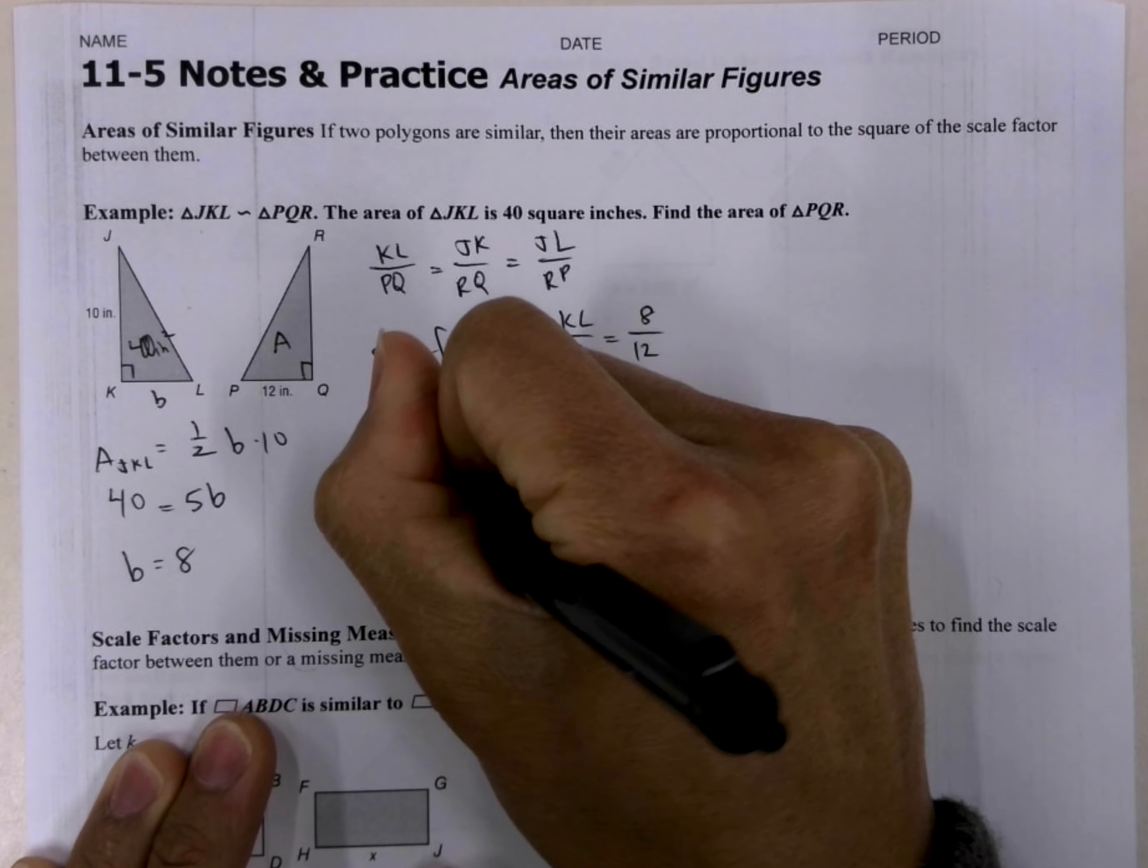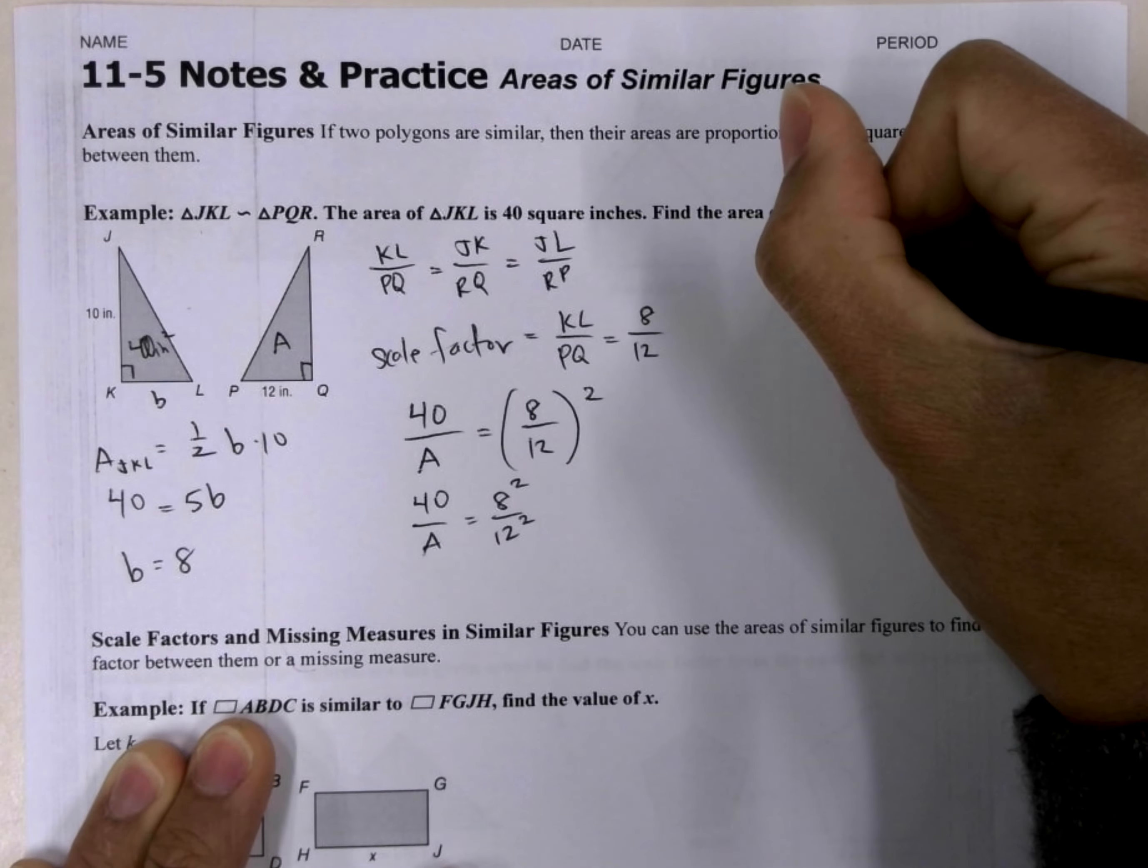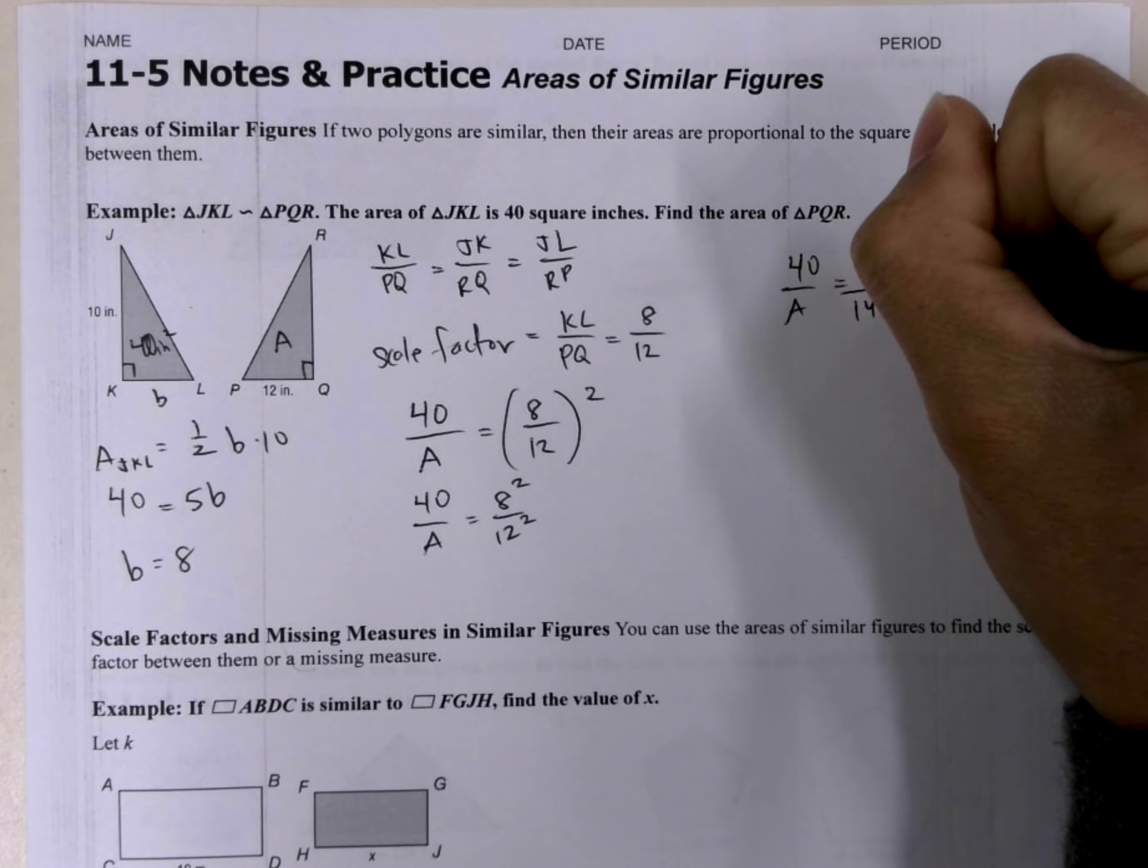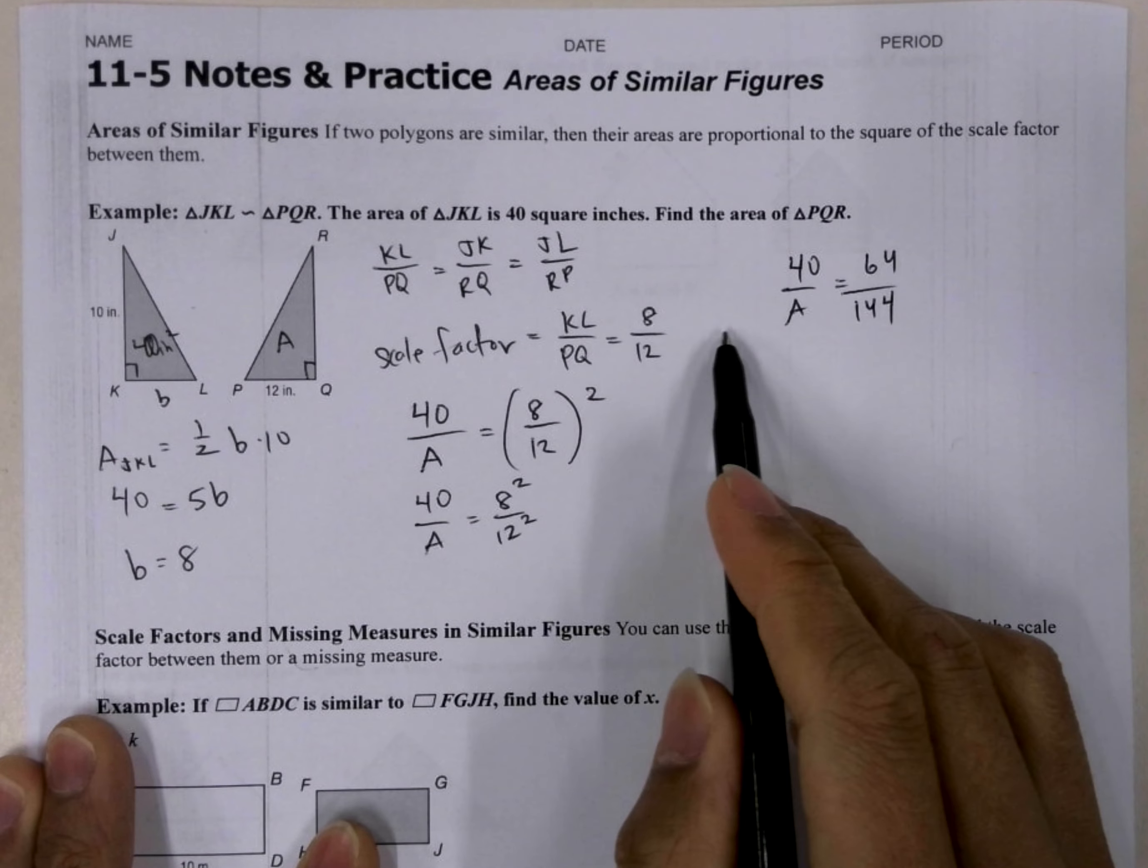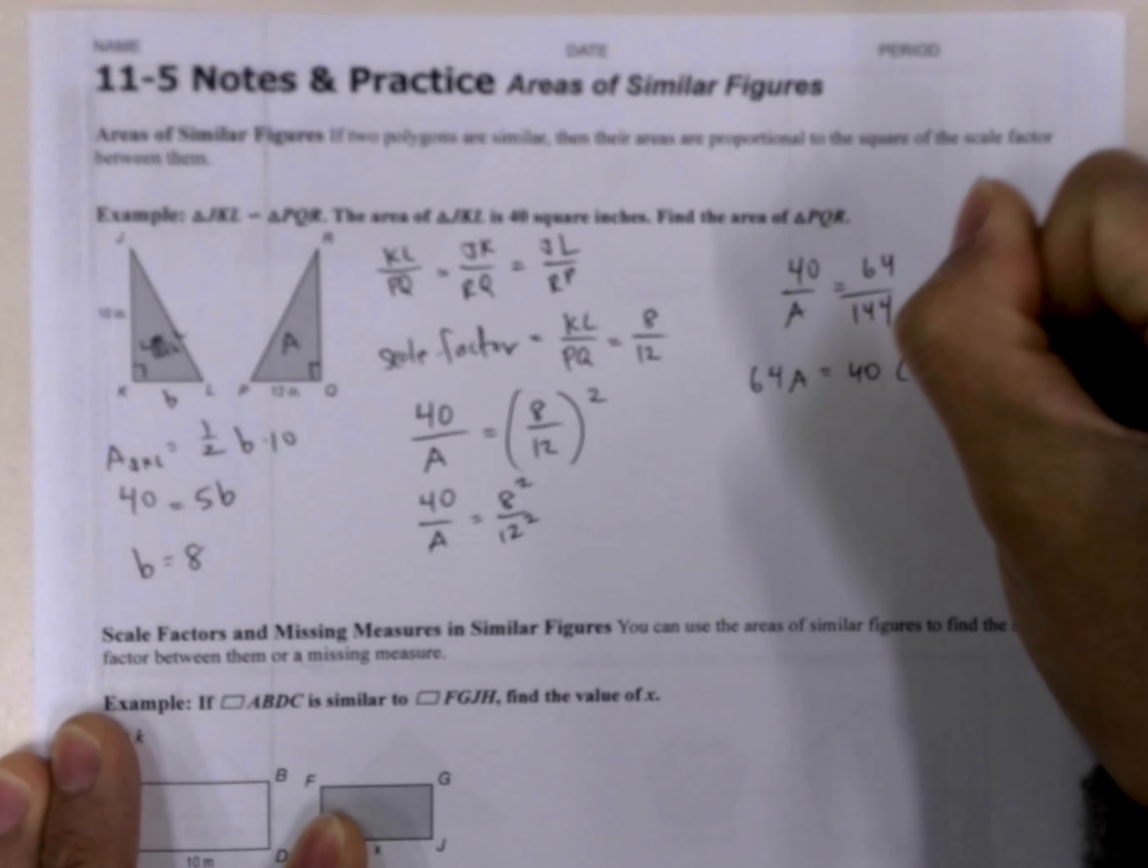So it's going to be 40 over A is equal to 8 squared over 12 squared. So let me go ahead and rewrite it over here. So we get 40 over A is equal to 64 over 144. And then now we can solve this pretty easily by using the means extremes theorem. We'll multiply the diagonals, so it's going to be 64A is equal to 40 times 144.